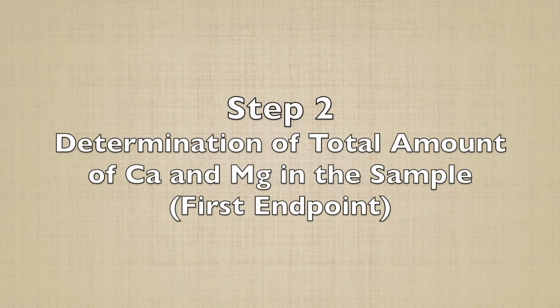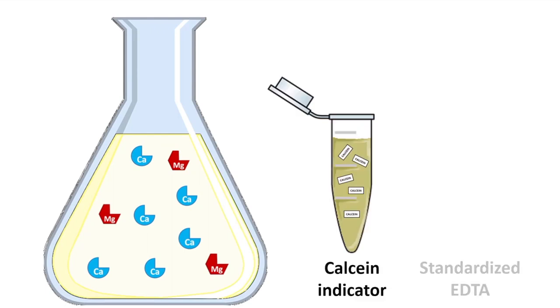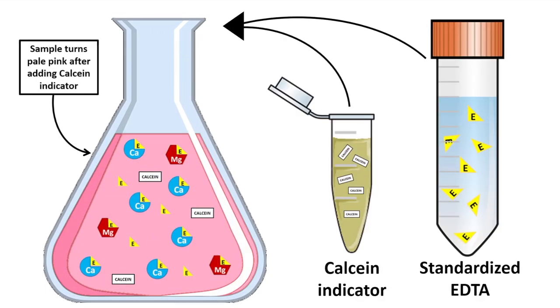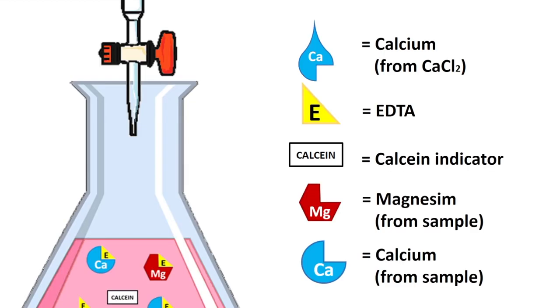The next step is to determine the amount of calcium and magnesium in your milk sample using the data obtained from the back titration until the first endpoint. After you add EDTA solution and the calcium indicator to the milk sample, the sample should turn pink. At this point, all calcium and magnesium ions are bound to EDTA, with some excess EDTA and free calcium indicator in the solution.